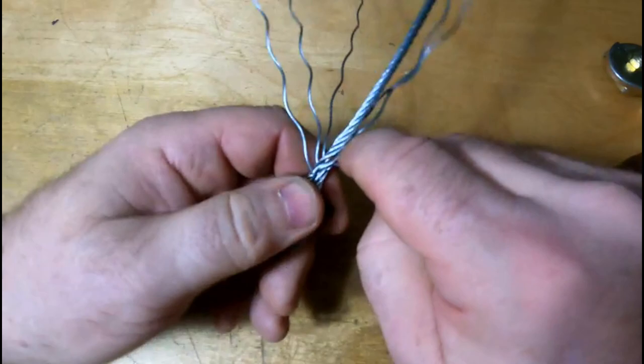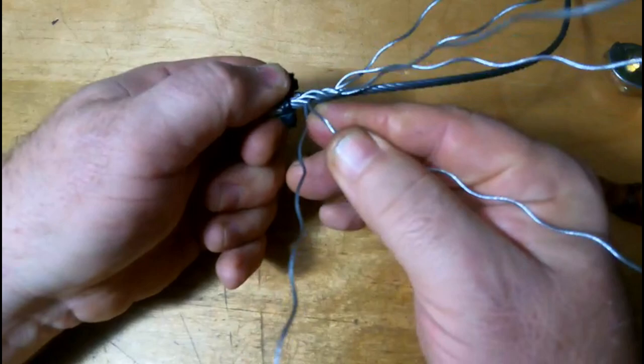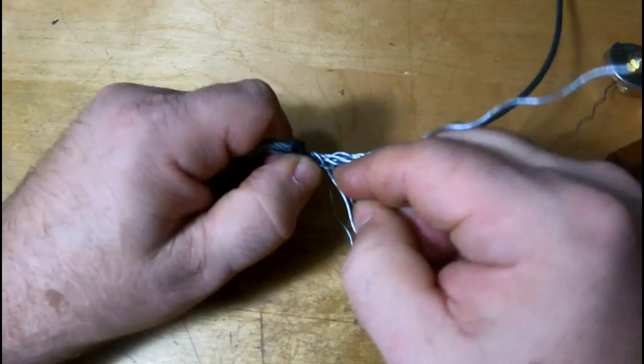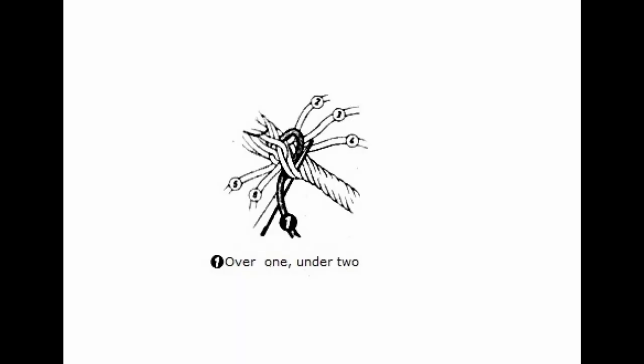All right, so now we've got our first set of tucks in there. And you'll know you got it right when there is, for every strand sticking out, there's a single strand between them. See how that is? Now, it's important before you get too far into it to make sure that all of these cables have been pulled as tight as you can get them. Otherwise, they'll start to separate right there.